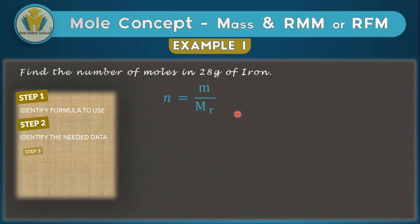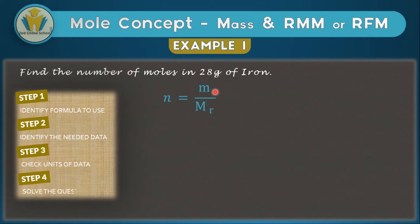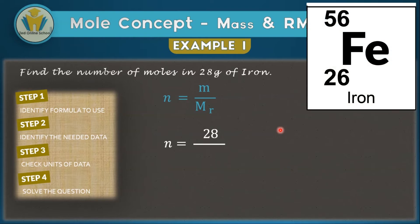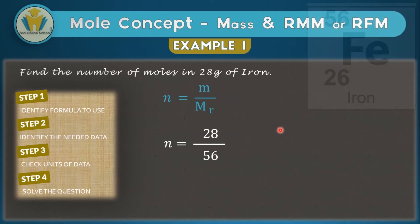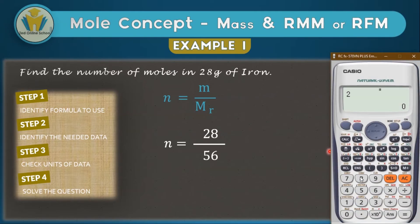Step three is checking if the units for the data collected are correct. In this formula, always make sure your mass is in grams — if it's in kilograms, convert it back to grams. Step four involves solving using the formula. We have 28 grams and the atomic mass of iron is 56 from the periodic table. We calculate 28 divided by 56.